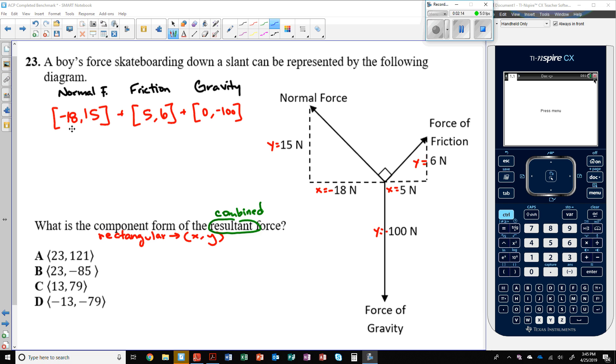Negative 18 plus 5 is negative 13. We have negative 18 and positive 5, that's negative 13. And then 0 stays, so x equals negative 13. And for the y values, we have a positive 15, 6, that's 21, and then we subtract 100. So y would equal negative 79 if I'm doing my math correct.